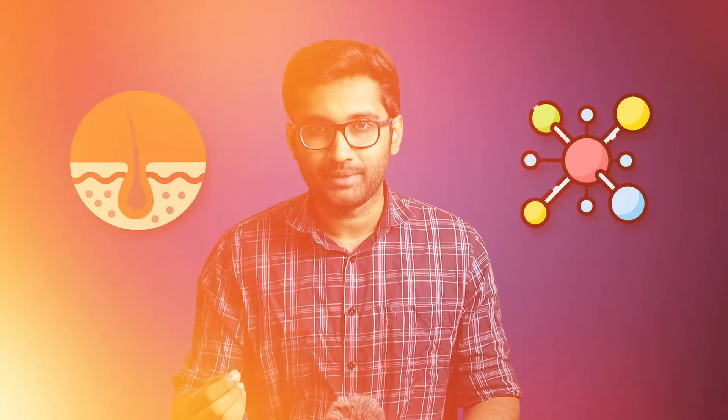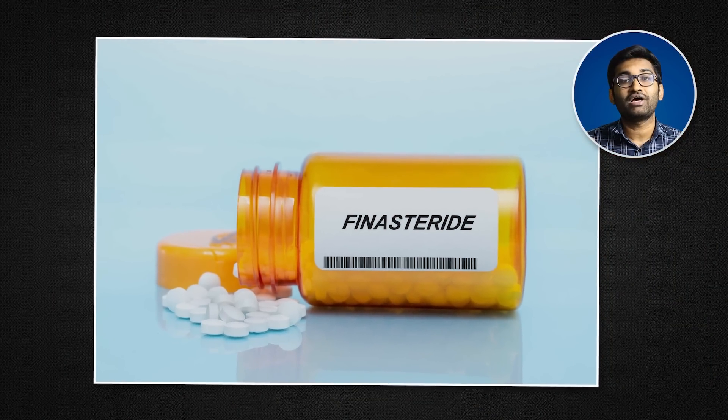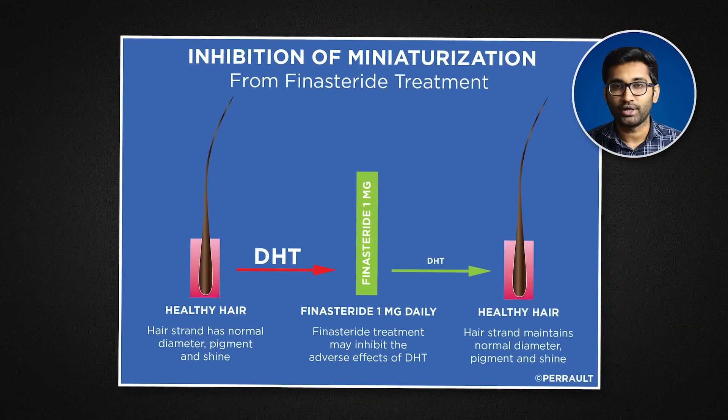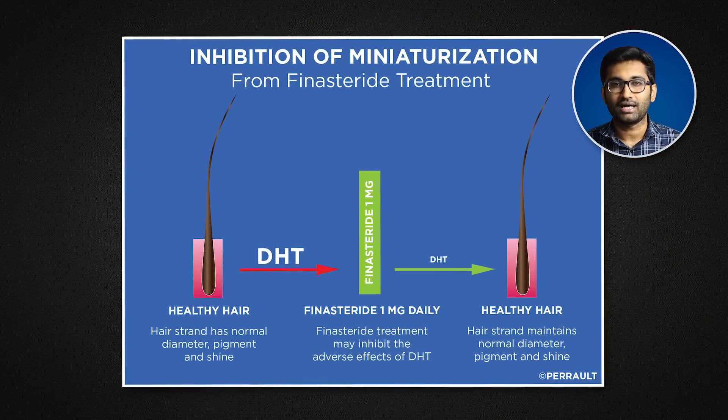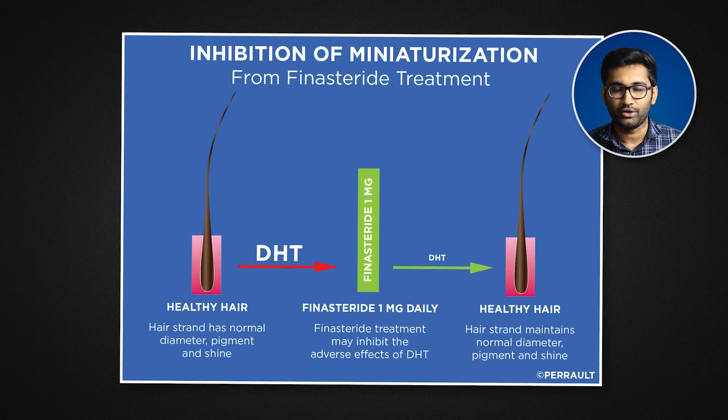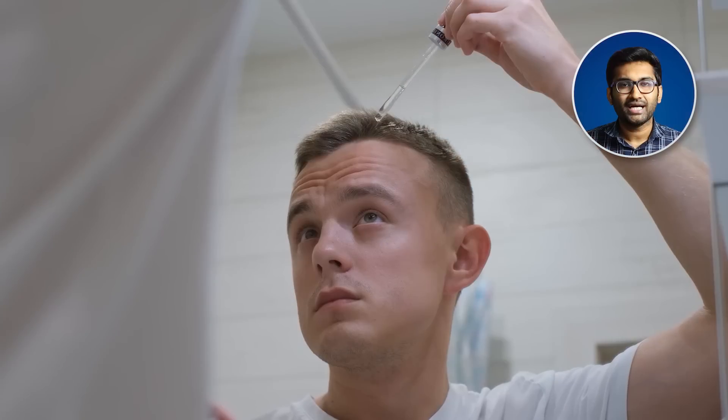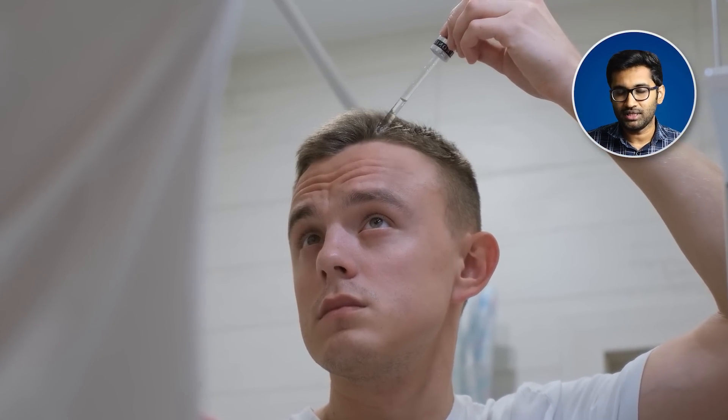To address hair follicle miniaturization, we use finasteride, which inhibits the 5-alpha-reductase enzyme. So, we have to prevent testosterone from converting to DHT, which reduces hair loss.